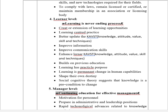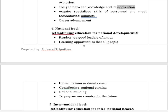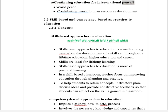5. Manager Level — Continuing education supports effective management: motivation for personnel, preparation for administrative and leadership positions, keeping pace with rapid technological advances and knowledge explosion, bridging the gap between knowledge and its application, acquiring specialized skills, and career advancement. 6. National Level — Continuing education supports national development: human resources development, contributing to national earning, and national building — preparing the country for the future. 7. International Level — Continuing education contributes to world peace and international human resources development.